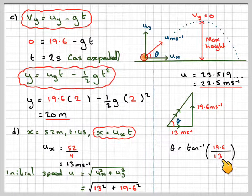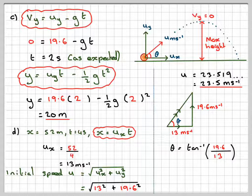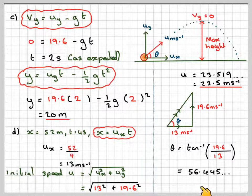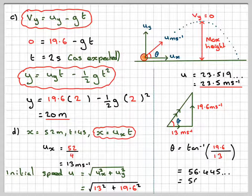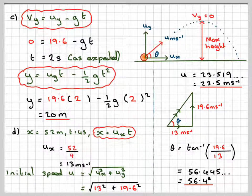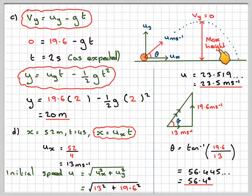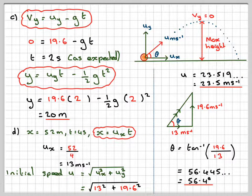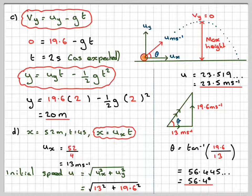It's tan to the minus one of 19.6 divided by 13, which will give me 56.445, which will give me 56.4 degrees. Now you might think there might be another angle, but for that other angle, the time in the air will not actually be four seconds. So there's only one possible answer, which is 56.4 degrees.